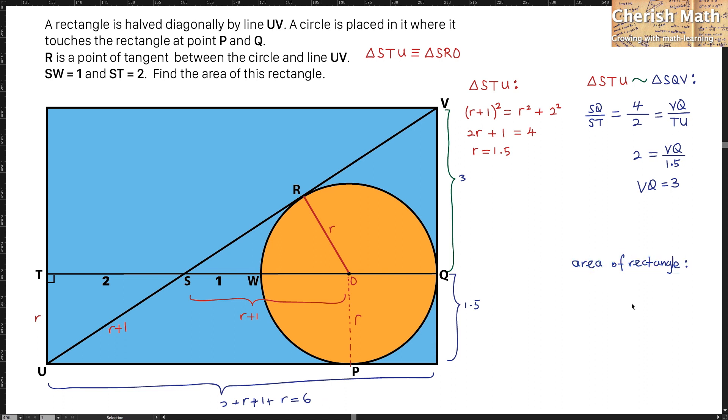To work out the area of this rectangle, I'm going to use 3 plus 1.5, which is the height of this rectangle, multiplied by 6 for the length of this horizontal. The value that I'm getting here is 27 units squared. That's the answer for the question today. Thanks for watching, and please subscribe.